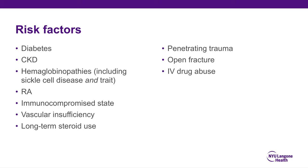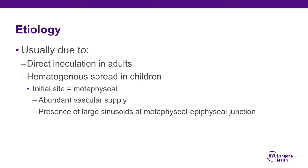Risk factors for osteomyelitis are again similar to non-unions — patient factors and injury-related factors, some modifiable, some not. Patient factors include diabetes, kidney disease, hemoglobinopathies, rheumatoid or inflammatory arthritis, immunocompromised state, vascular insufficiency, and long-term steroid use. Penetrating trauma, open fracture, and IV drug abuse are also risks. In adults, osteomyelitis is usually due to direct inoculation. In kids, it tends to be hematogenous spread, with the initial site typically metaphyseal, due to abundant vascular supply and large sinusoids at the metaphyseal-epiphyseal junction.